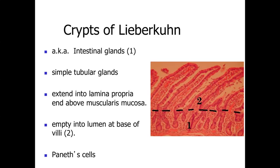It is important to recognize the difference between intestinal villi and the crypts of Lieberkühn. In this slide, the finger-like projections extending up into the luminal space are the villi, while the epithelial lining extending down at the base are the crypts of Lieberkühn — also called intestinal glands. These are simple tubular glands pushed down into the lamina propria, all ending above the muscularis mucosa. Towards the base of the crypts are the Paneth cells with their bright pink or red cytoplasmic granules, where lysozyme is stored prior to release.